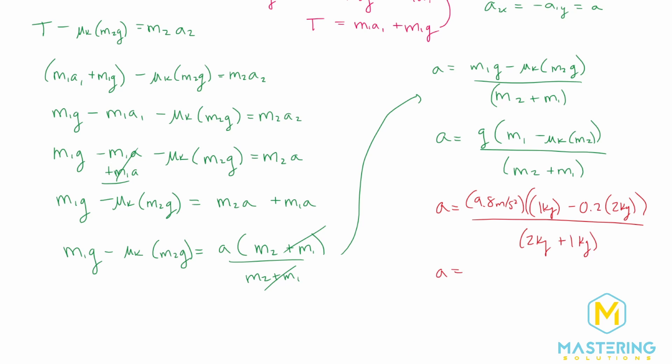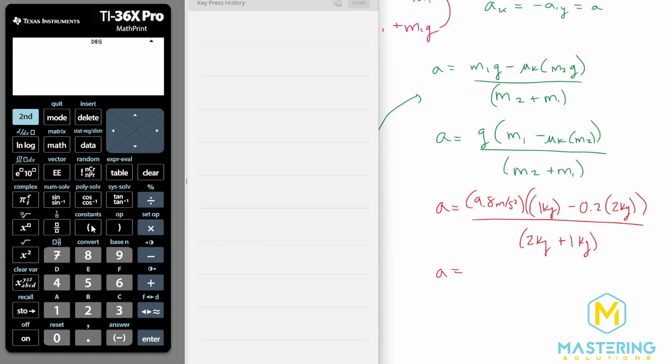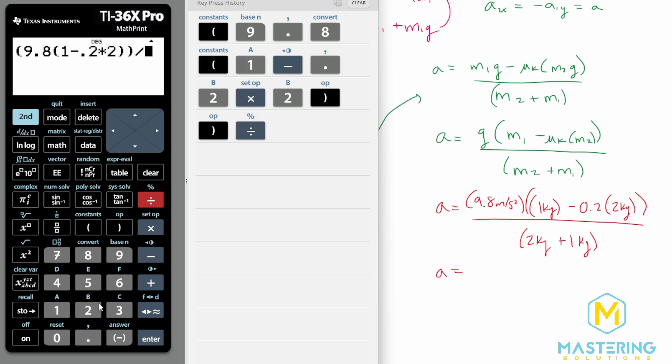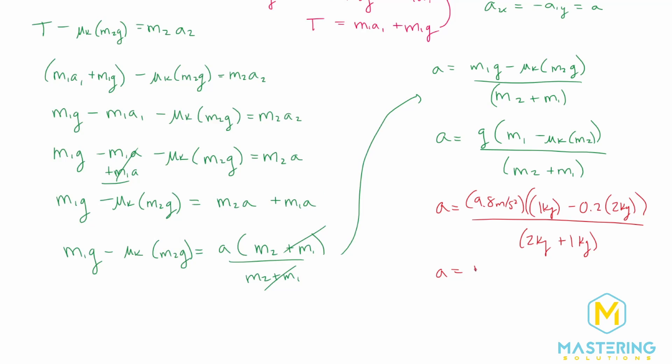All right so finally now we can plug it into our calculator here. So we have 9.8 times 1 minus 0.2 times 2. All that will be divided by 2 plus 1 or 3. So that gives us 1.96. That is 1.96 meters per second squared for the acceleration and we can go to 2 for significant figures or just rounding. So 2 meters per second squared is the acceleration for block 2 in this question.